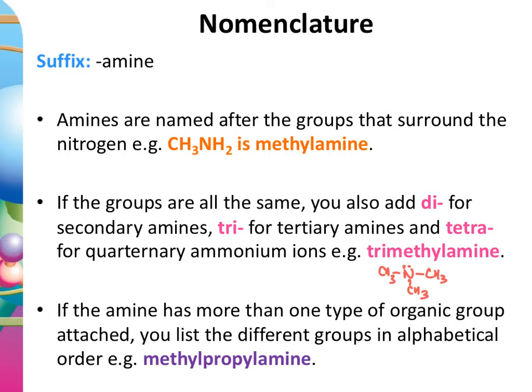It is possible for an amine to have different types of alkyl groups attached. For example, a nitrogen with a hydrogen, a methyl group, and a propyl group would be called methylpropylamine. In the vast majority of cases based on exam papers, amine names appear in the question and you need to decode them. There's only been one occasion where you've actually had to name something yourself.